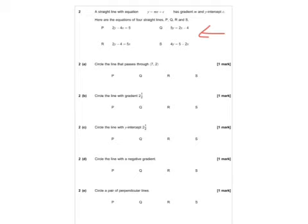So question 2a says, circle the line that passes through 7, 2. So if I swap x for 7 into each and y equals 2, whichever one works. So if I did 2 times 7 is 14 minus 4 times 2, which is not 5, so it's not p. 5 times 2 is 10, 2 times x, 2 times 7 is 14 minus 4. Oh look at that, it's q. So there we go. So that's the first one.